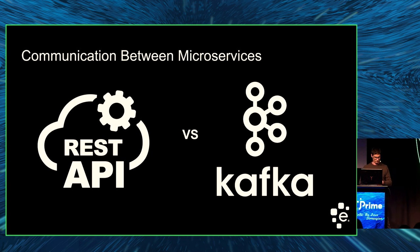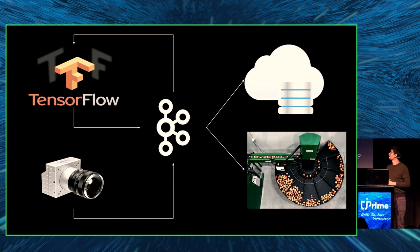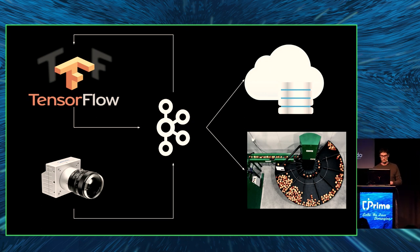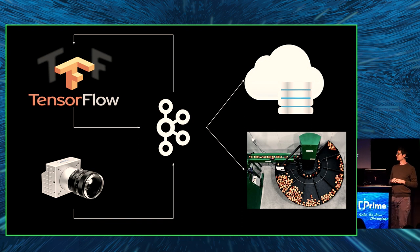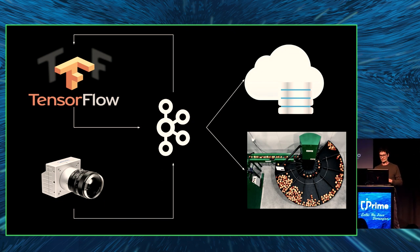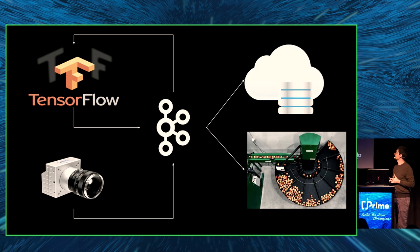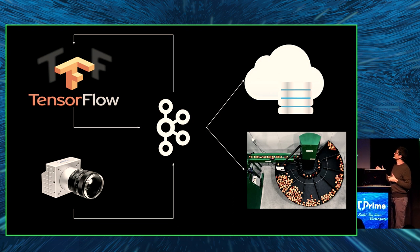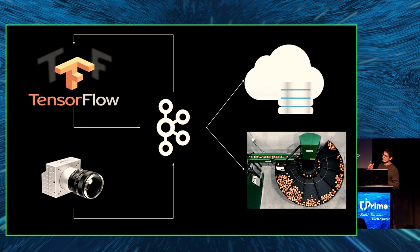This is our final architecture with the four components and Kafka in the middle for communication. There are two Kafka topics: one for images and one for ML classifications. The camera sends images; TensorFlow reads an image and produces a classification. The classification goes to the cloud component and to the sorting machine. The cloud component also pulls images from the image topic and uploads them to the cloud.